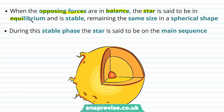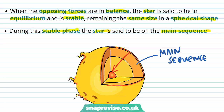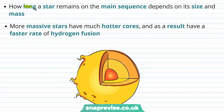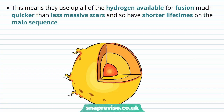When these opposing forces are in balance, the star is said to be in equilibrium and is stable, remaining the same size in a spherical shape. During this stable phase, the star is said to be on the main sequence. When a star is on the main sequence, the force of gravity is exactly balanced by the radiation and gas pressures. The length of time a star spends on the main sequence is dependent on its size and mass. More massive stars have much hotter cores and as a result have a faster rate of hydrogen fusion, burning through their hydrogen much quicker than less massive stars, and so have shorter lifetimes on the main sequence.